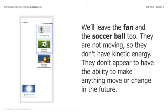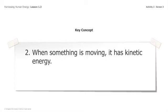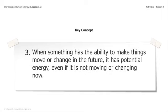We have the fan not spinning, the soccer ball, the light, the light from the sun — there's no physical movement. We'll look into these objects a little later in this unit. But I want you to identify that when something is moving, it has kinetic energy. When something has the ability to make things move or change in the future, it has potential energy, even if it's not moving or changing at that time. Going back to the bike story — the object is moving, so it has kinetic energy. But we're going to look at whether the bike itself has energy, or whether that energy comes from somewhere else.